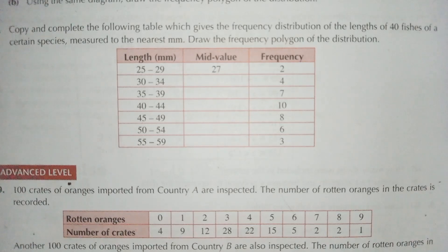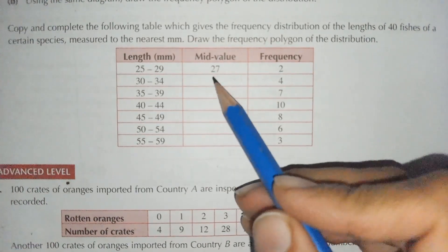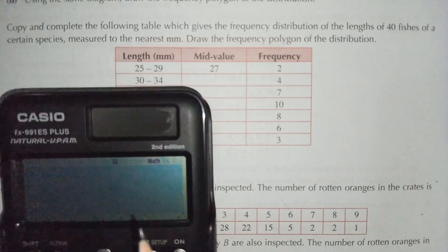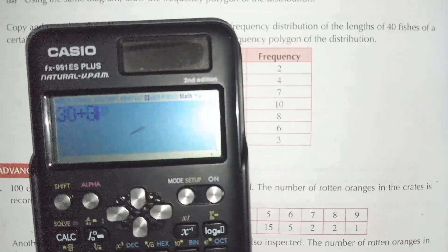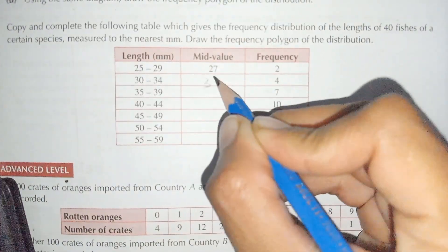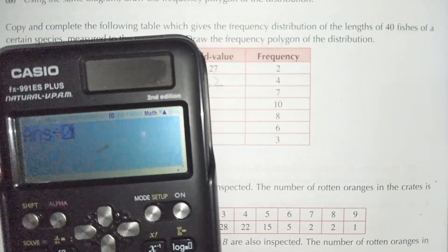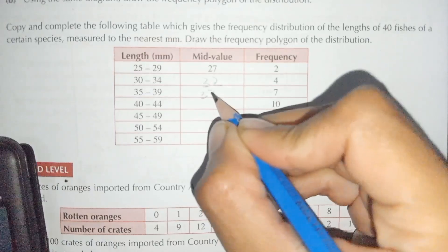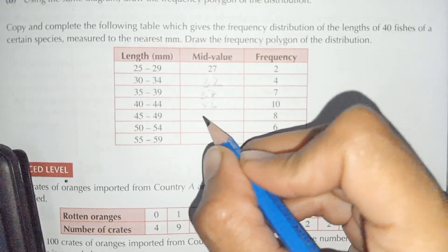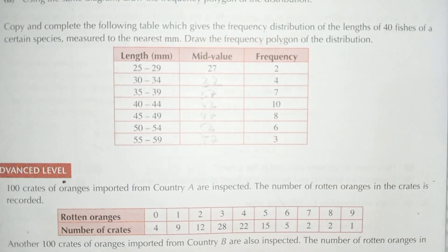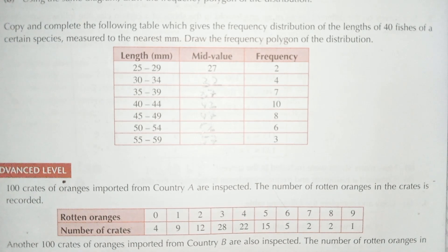Question number eight: copy and complete the following table which gives the frequency distribution of the length of 40 fish of a certain species measured to the nearest millimeter, then draw the frequency polygon. We calculate the mid values by adding both class boundary values and dividing by 2: 30 + 34 / 2 = 32, then 35 + 39 / 2 = 37, then 42, 47, 52, and 57.